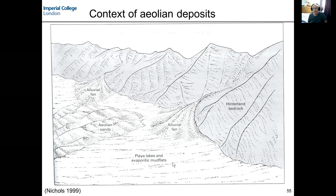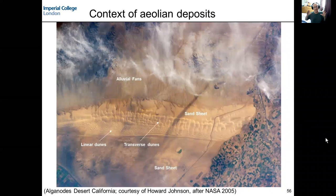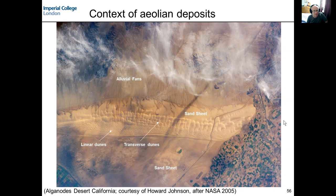We can also develop lakes, which can be ephemeral - in other words, they're not present all the time within the basin center. To give you a real example of this, we're looking down at an aerial satellite view of aeolian deposits in California. Mountains here, alluvial fans supplying sediment at the margins of the basin, and then some of that sand being reworked by wind to form aeolian dune systems of different types depending on their geometry and scale.